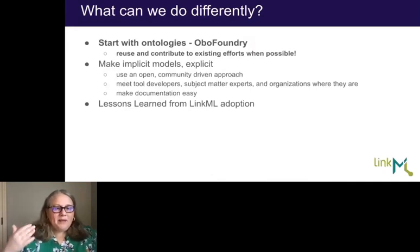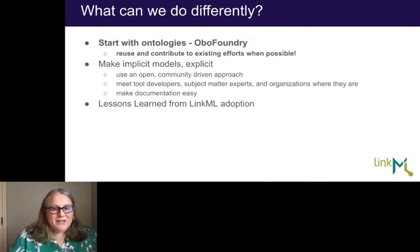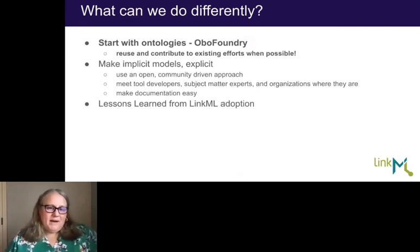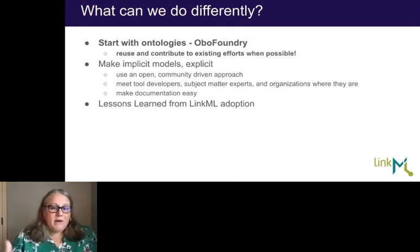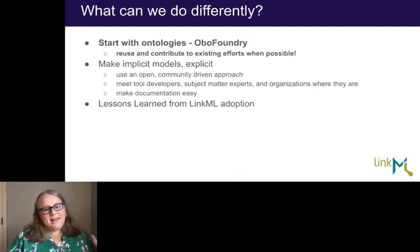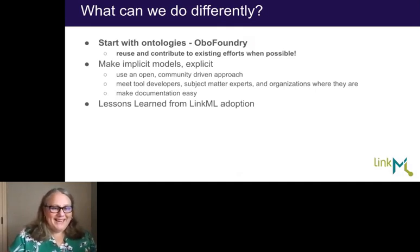So what can we do differently? That's the heart of my talk. I'm going to cover three main things we've learned: first, we want to start with ontologies; second, we want to reuse and contribute to existing efforts; and third, we're going to take our implicit models described by these data structures and make them explicit — and this is where I'll introduce LinkML. I'll also share lessons learned from the recent and ever-increasing adoption of LinkML over the last year or two.